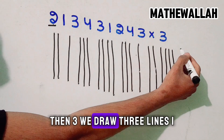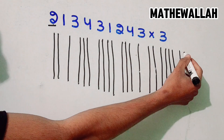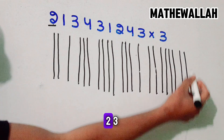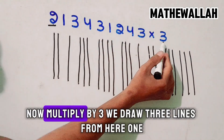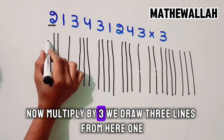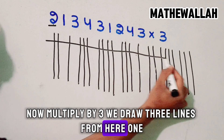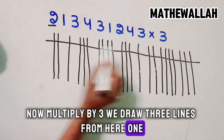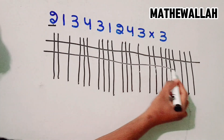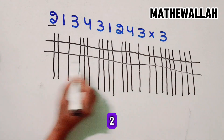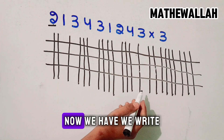Then 3 — we draw 3 lines: 1, 2, 3. Now, multiply by 3. We draw 3 lines from here: 1, 2, 3.